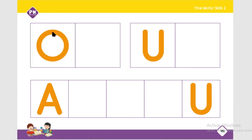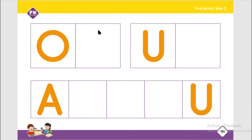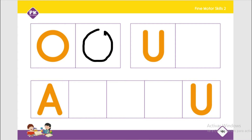We are going to start from the top, going to the left. We are going to make a big circle to the left, like this. And this is our capital O.